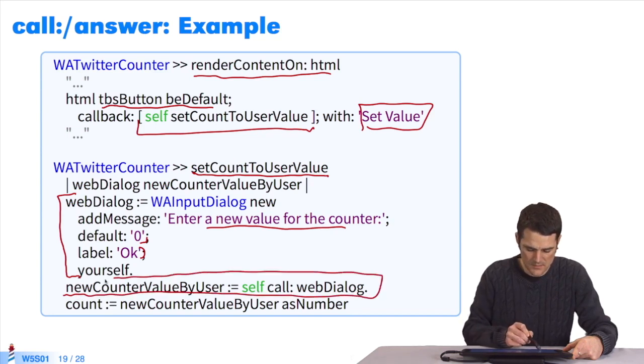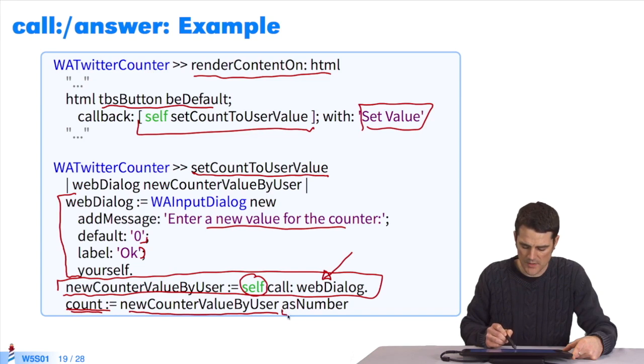We're going to say current component, so self. Remember, self is the Twitter counter. Call the dialog box we've just created and give me the result. The result will be the new value of the counter. Then, when we've finished here, we're going to say count, so the value of the counter, take this new value entered by the user in the form of a number. Quite simply.